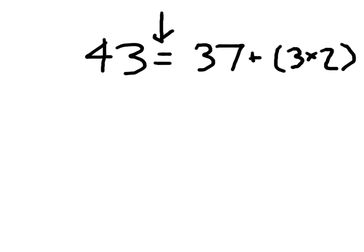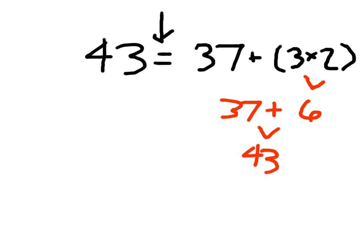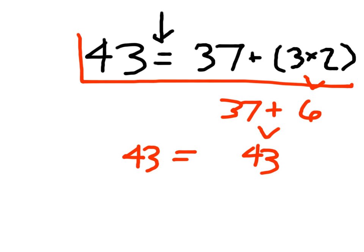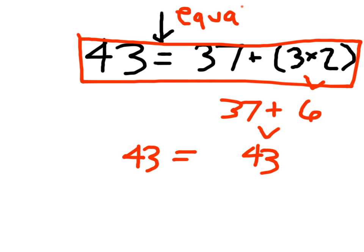With those expressions. Now if I evaluated this for you, just so that you can see that my equation does balance: 37 plus 6 — I'm evaluating this right-hand side of the equation — 43 does equal 43. My equation is balanced. What I'm boxing right here is the equation, because it has an equals sign.